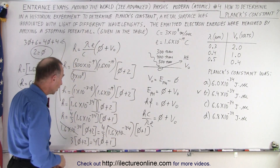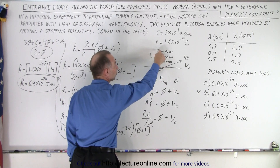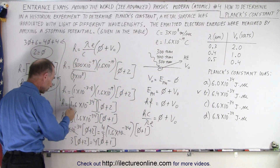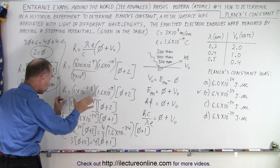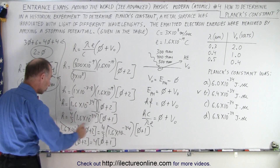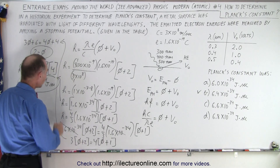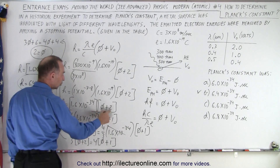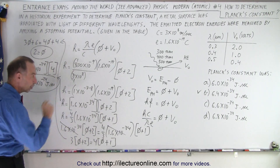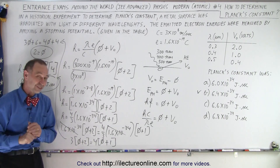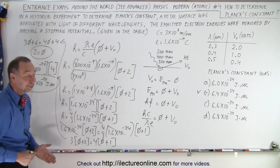With stopping potential 2 volts for 300 nm, and then for 400 nanometers — which is 4/3 of 300 nm — everything is the same except multiplied by 4/3 and the stopping potential becomes 1 volt. Setting the two expressions for h equal to each other lets us solve for the work function. Once we plug that in, 2 plus 2 is 4, and 1.6 times 4 gives us 6.4 times 10 to the minus 34 — that is how you solve this particular problem.